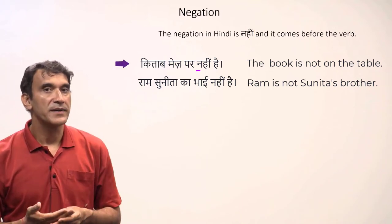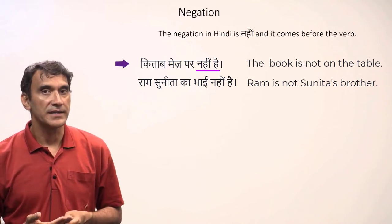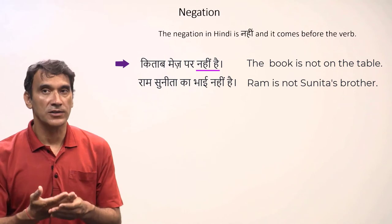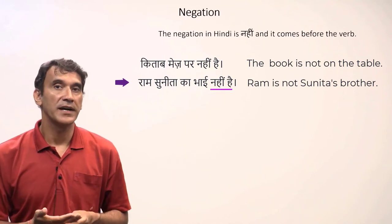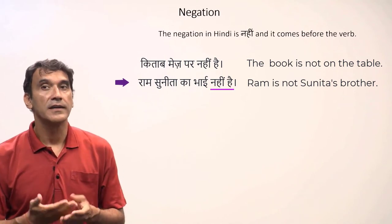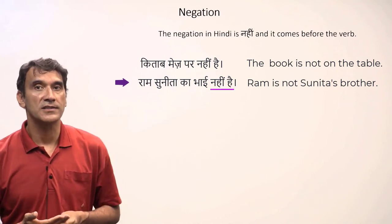'Kitab mez par nahi hai' — The book is not on the table. 'Ram Sunita ka bhai nahi hai' — Ram is not Sunita's brother.